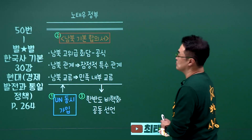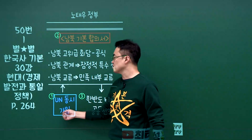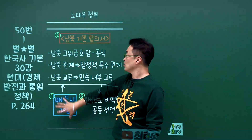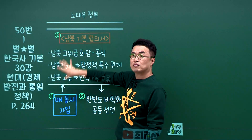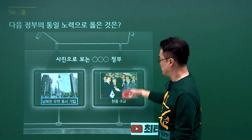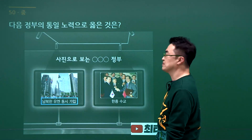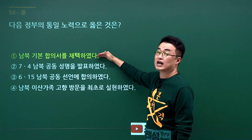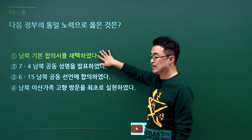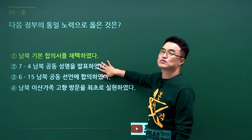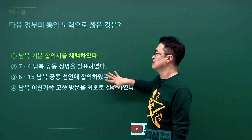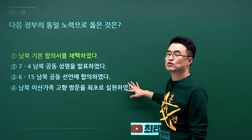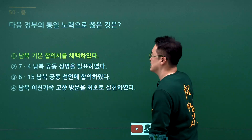노태우 정부 남북관계 문제입니다. 노태우 정부 때 유엔 동시 가입도 했고 남북기본합의서도 체결했습니다. 문제에서 남북한 유엔 동시 가입이 나왔으니 노태우 정부이고 남북기본합의서가 정답입니다. 1번입니다. 7.4 남북공동성명은 박정희 정부, 6.15 남북공동선언은 김대중 정부, 남북 이산가족 고향방문 최초는 전두환 정부입니다. 정답은 1번입니다.